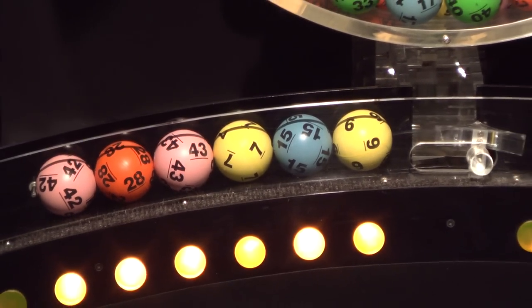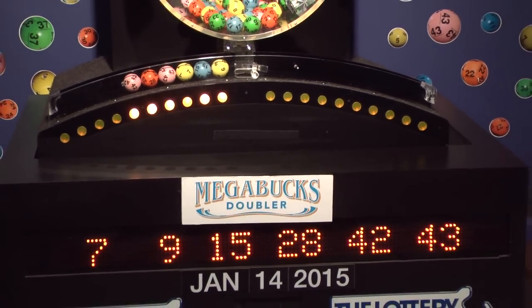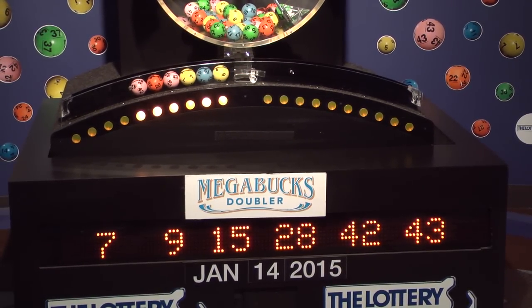Once again, the winning Megabucks Doubler numbers for Wednesday, January 14th are 7, 9, 15, 28, 42, and 43.